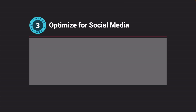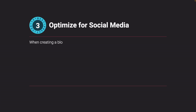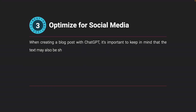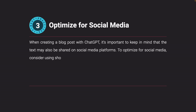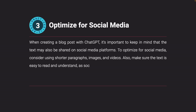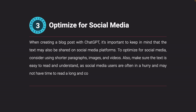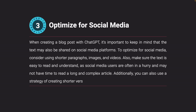Optimize for social media. When creating a blog post with ChatGPT, it's important to keep in mind that the text may also be shared on social media platforms. To optimize for social media, consider using shorter paragraphs, images, and videos. Also, make sure the text is easy to read and understand, as social media users are often in a hurry and may not have time to read a long and complex article. Additionally, you can use a strategy of creating shorter versions of the text for social media sharing.